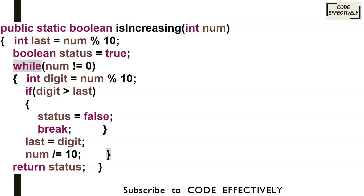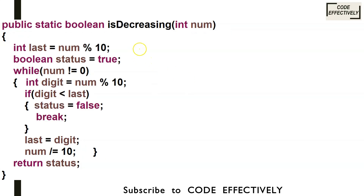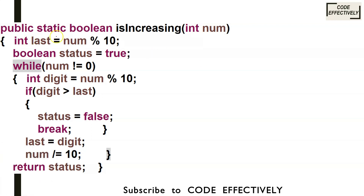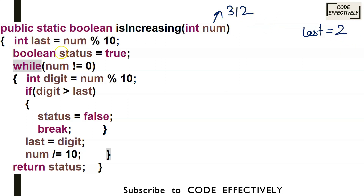I have made two separate methods — first it checks for decreasing, then for increasing. Now I will give you a dry run so you understand how to check for increasing and decreasing. Let's take the number 3, 1, 2 as an example. This is a bouncy number because it does not follow a specific pattern. First, the value of last will be num modulus 10, which gives us 2. The boolean status flag is initially set to true.